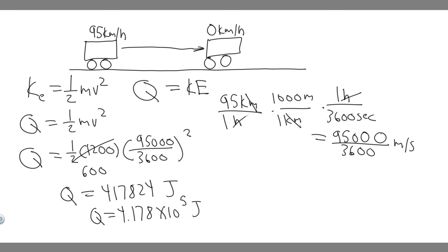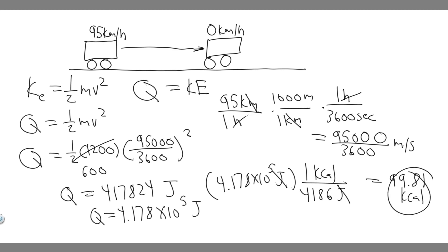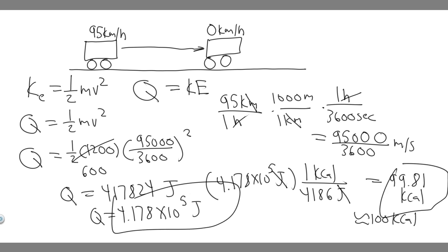So we have 4.178 times 10 to the 5 joules, and you need to know that 1 kcal is equal to 4,186 joules. The joules will cancel and we get the unit we want. Just take your number and divide by 4,186, and you're going to get 99.81. You can round this if you want — it's basically 100, or 10 to the 2. So these are going to be your answers: approximately 4.178 × 10⁵ joules and approximately 100 kilocalories.